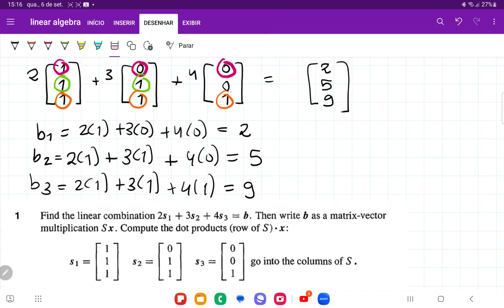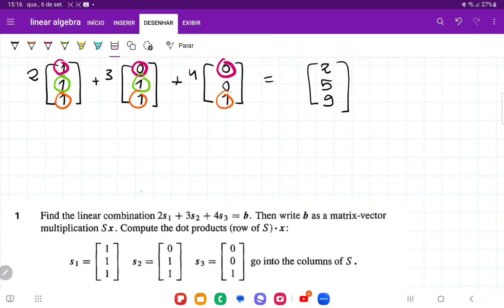It's asking us to write b as a matrix-vector multiplication Sx. So we have the matrix S with columns s1, s2, and s3. The matrix has columns (1, 1, 1), (0, 1, 1), and (0, 0, 1).